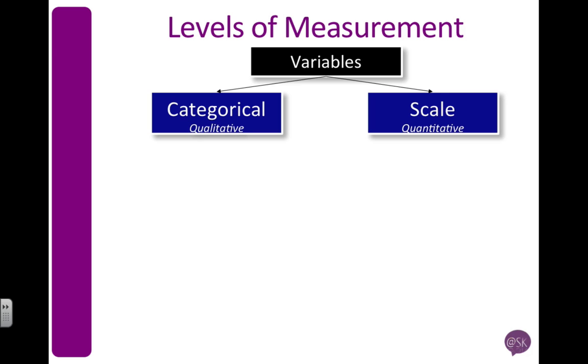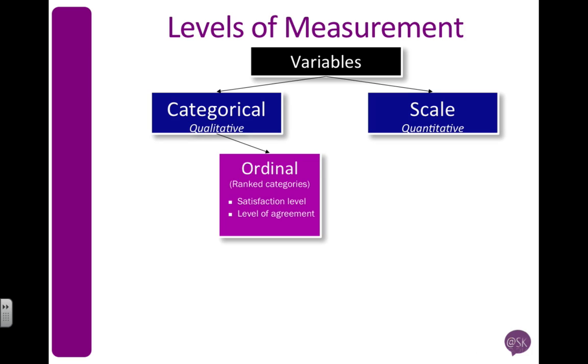If you've got data that's categories, for example, from a questionnaire, someone has to tick a response, say their age group or their income group, that would be categorical. It's either ordinal or nominal. Ordinal means that the categories have a meaningful rank or order to them.